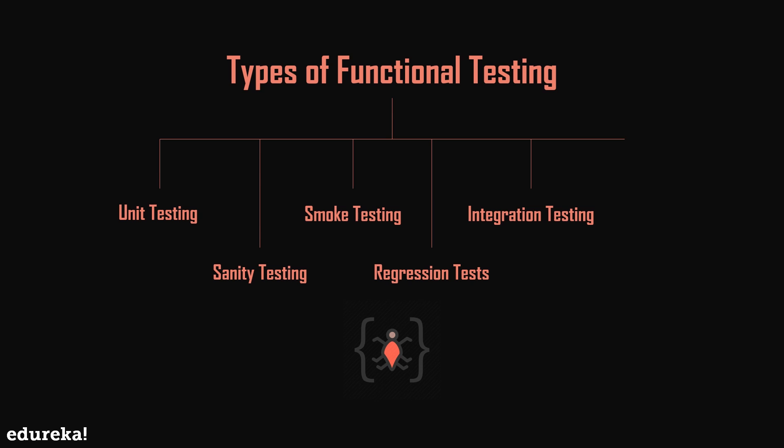Next up is integration testing. When the system relies on multiple functional modules that might individually work perfectly but have to work coherently when combined together to achieve an end-to-end scenario, validation of such scenarios is called integration testing. The final type is usability testing, where the product is exposed to the actual customer in a production-like environment and they test the product. User comfort is derived from this and feedback is taken — this is similar to user acceptance testing.